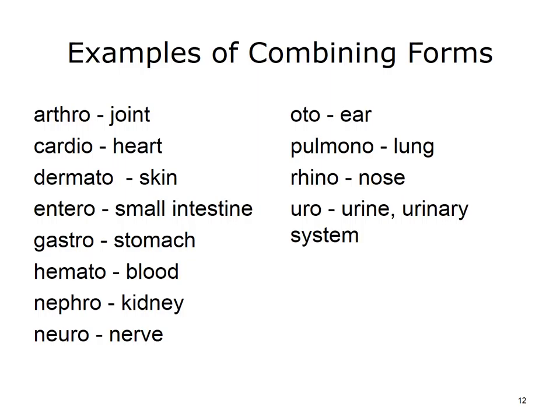Examples of word roots and their combining vowels are illustrated here: arthro, joint; cardio, heart; dermato, skin; entero, small intestine; gastro, stomach; hemato, blood; nephro, kidney; neuro, nerve; oto, ear; pulmono, lung; rhino, nose; uro, urine or urinary system.